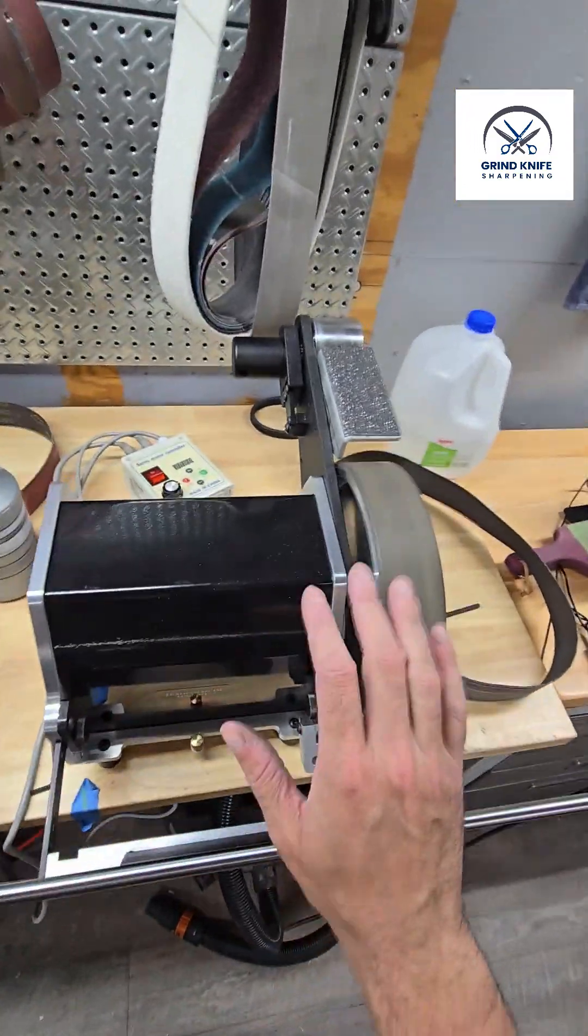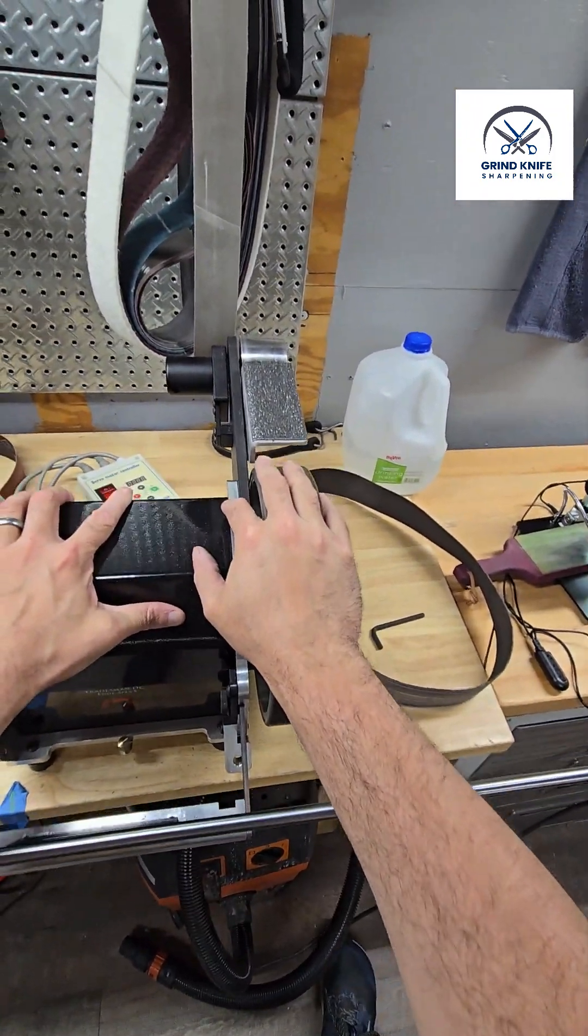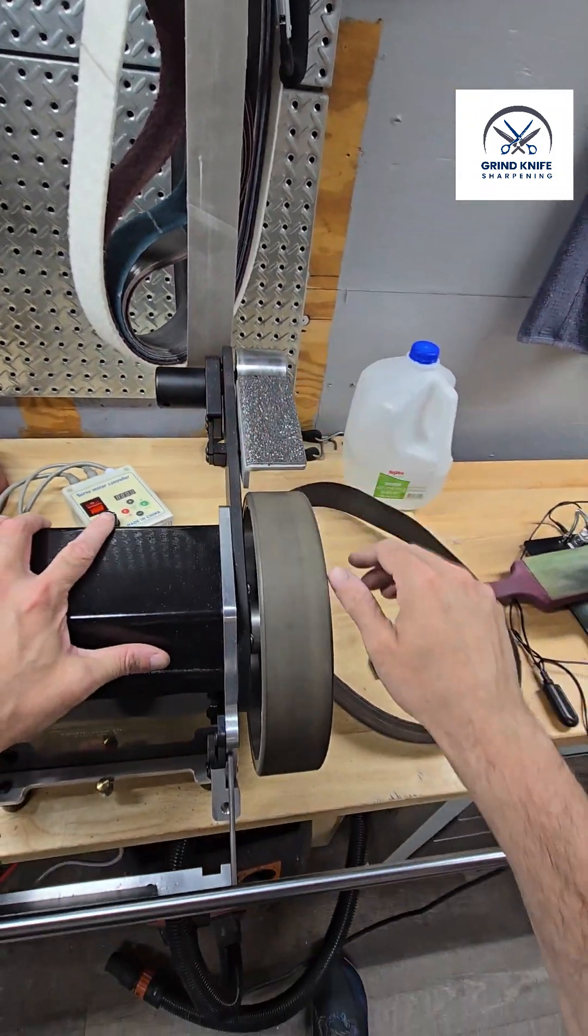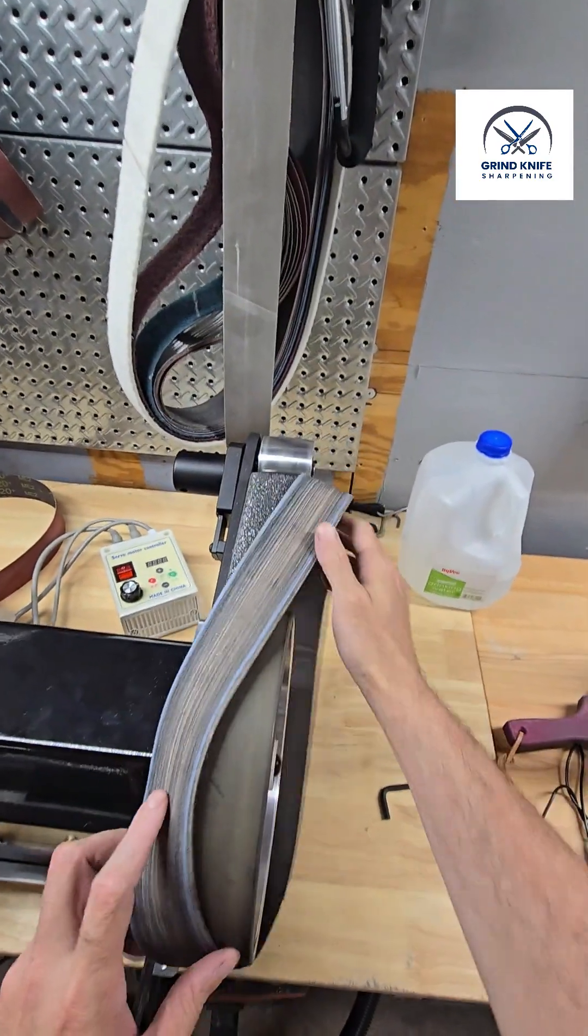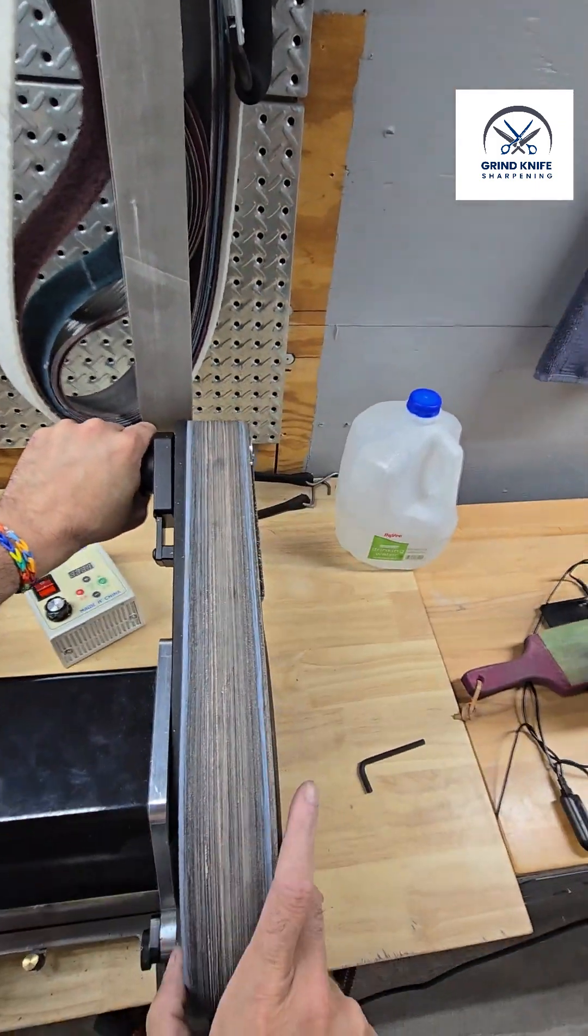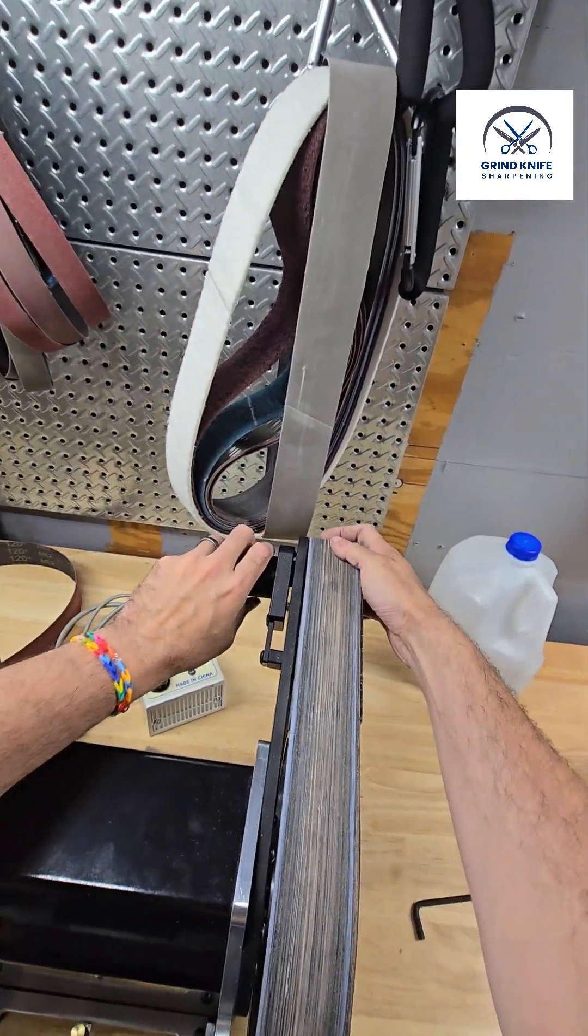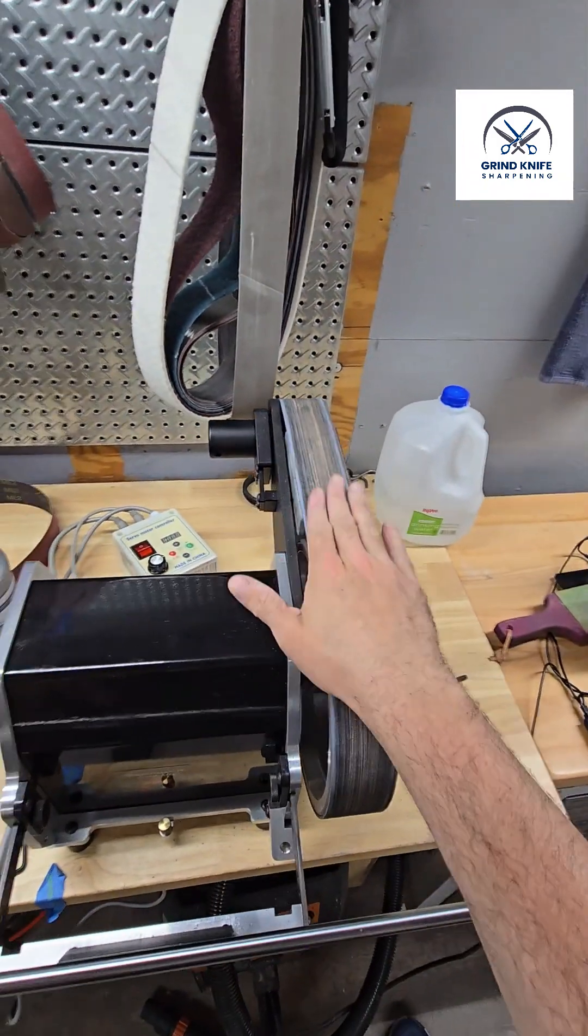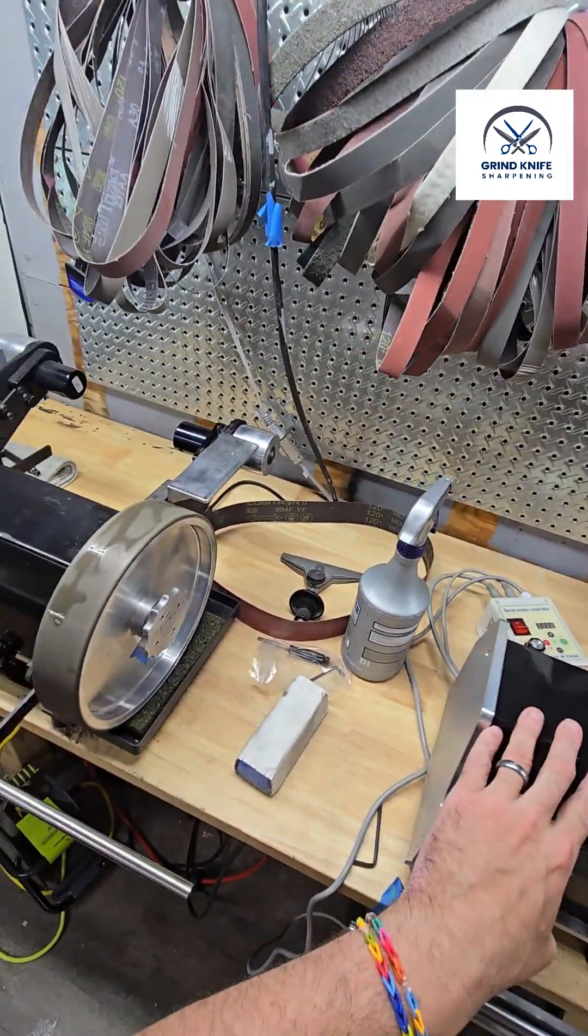One other thing you're going to see in this video is I have a prototype stropping machine which is a one wheel. This isn't available for purchase yet. It's just a prototype. It should be available around 2025. We're going to be running a stropping wheel. Now it's entirely possible to do this all on the Apex, but I do production sharpening and so speed for me is most important.